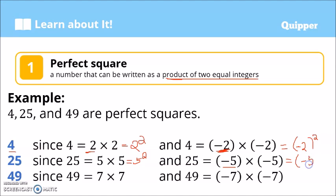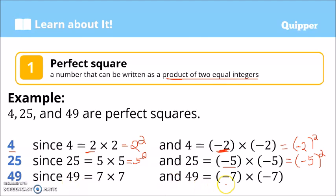We write this as negative 5 squared, with parentheses. The parentheses are important because they indicate that the negative is included in the multiplication. If the negative is outside the parenthesis, only 5 is multiplied twice. So the negative must be inside the parenthesis to mean negative 5 times negative 5. Similarly, 49 is a perfect square: 7 times 7 equals 49, and negative 7 times negative 7 also equals 49, so negative 7 squared equals 49.